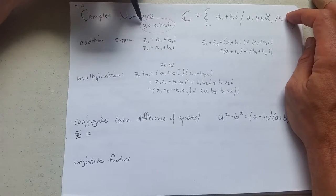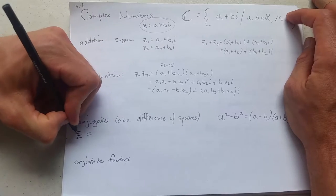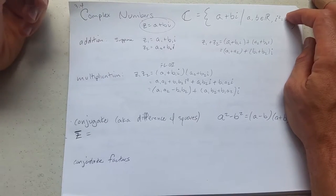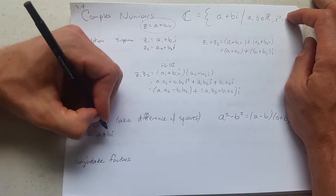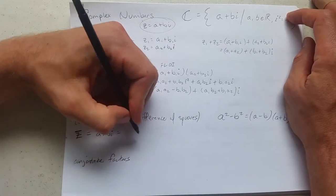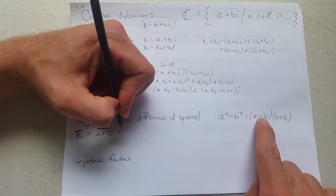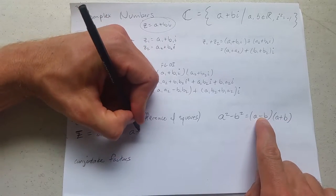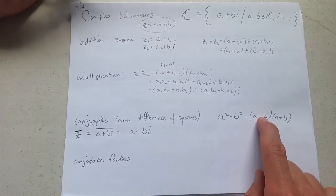So up here, this is the number z we're working with. What is a conjugate? The notation is you just draw a bar right on top of it. What does that mean? If this was your original number, your conjugate, you flip the sign of the second part. So you just take whatever b is and make it negative.